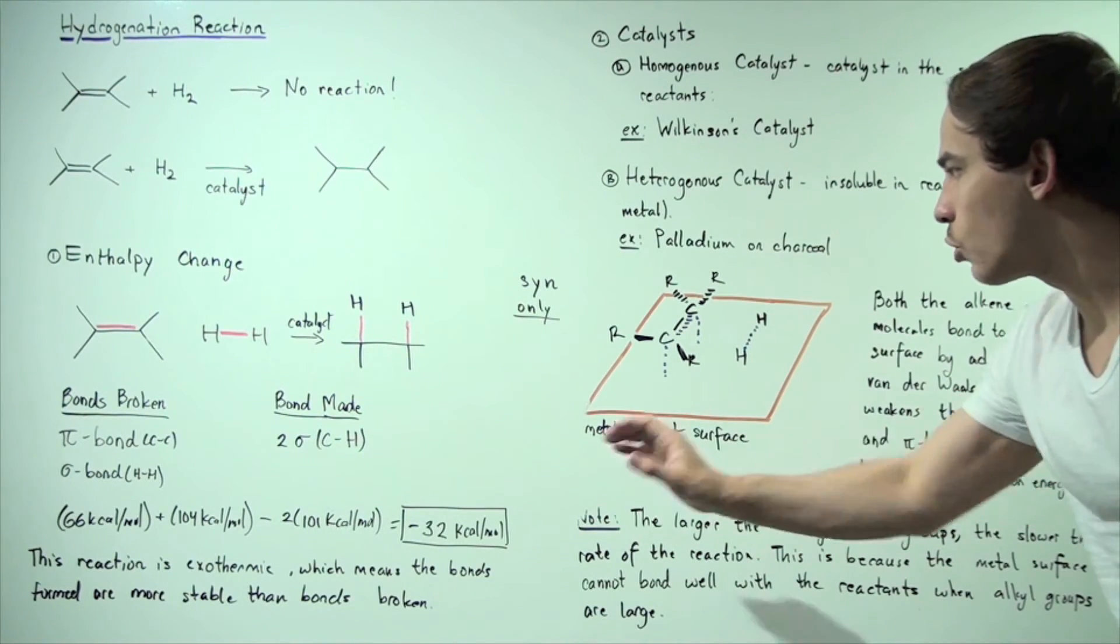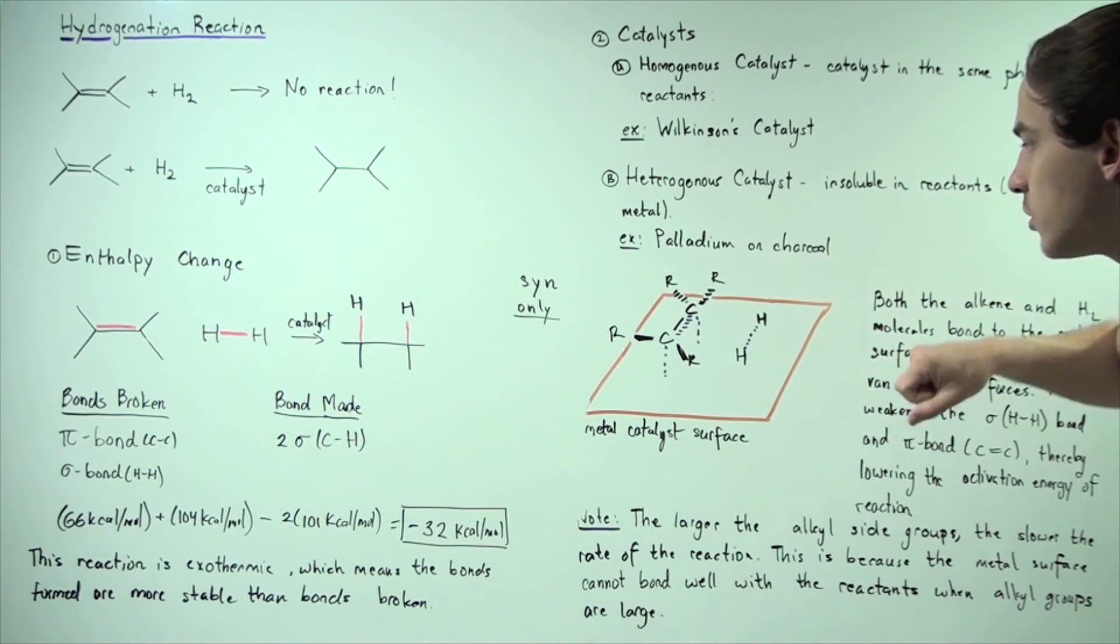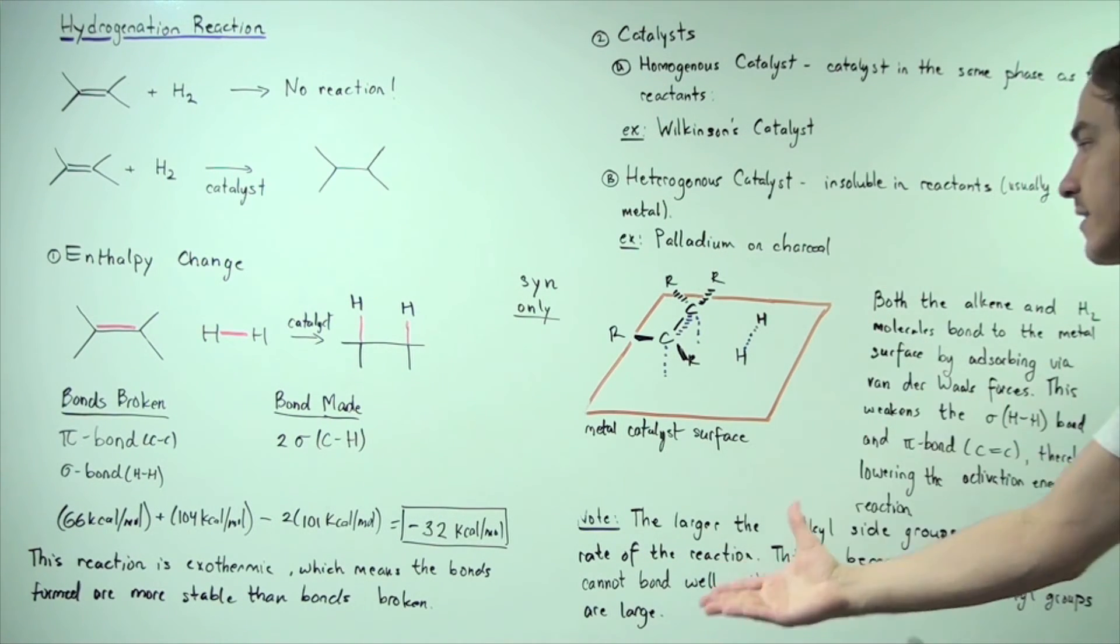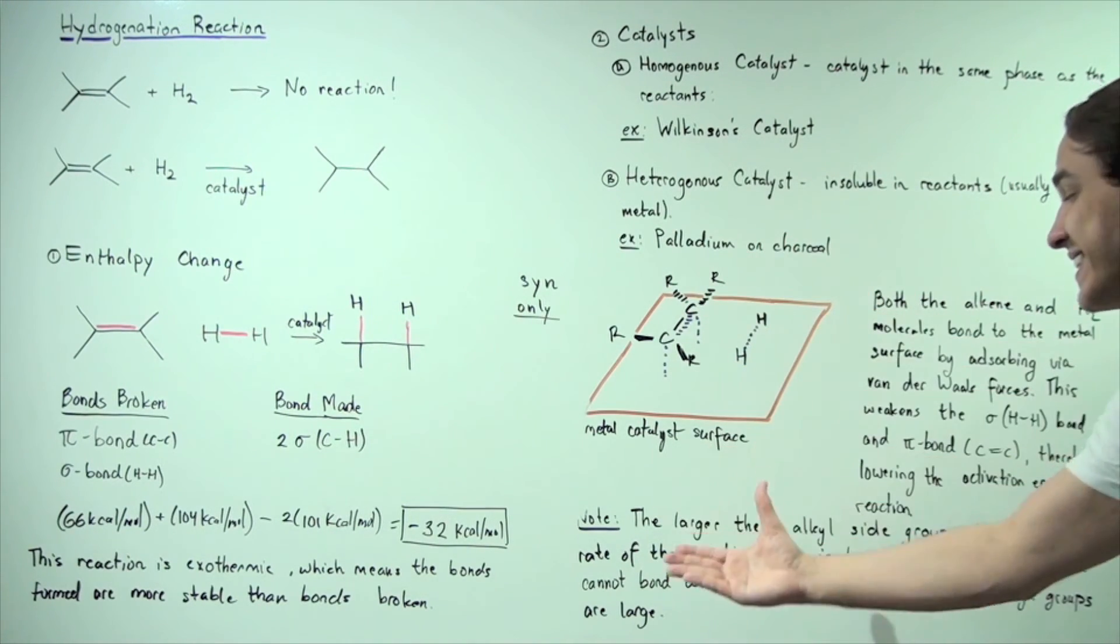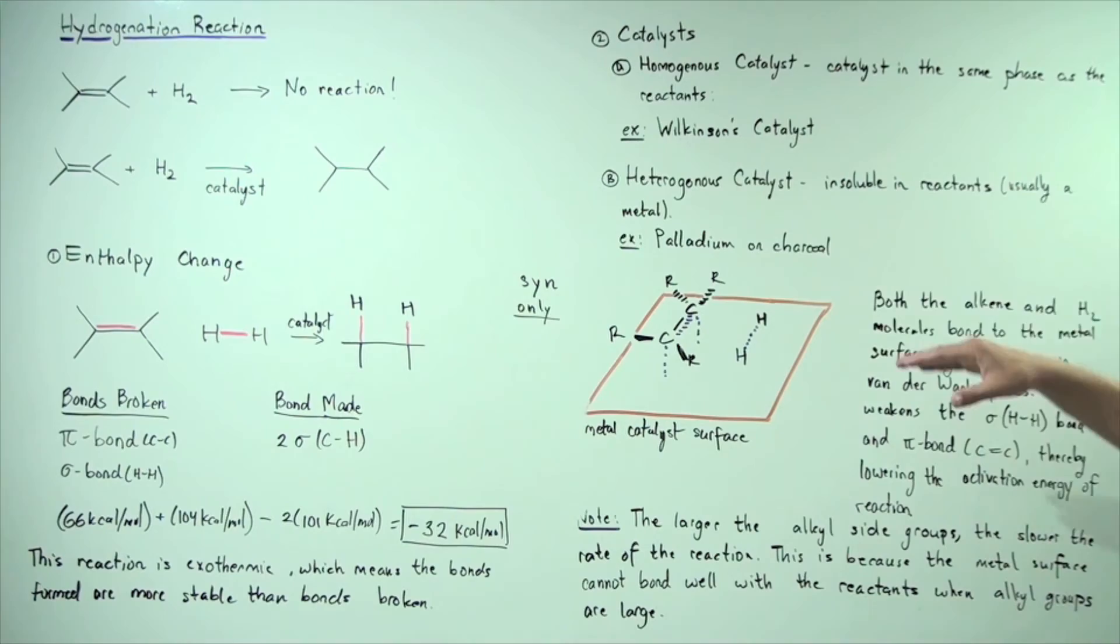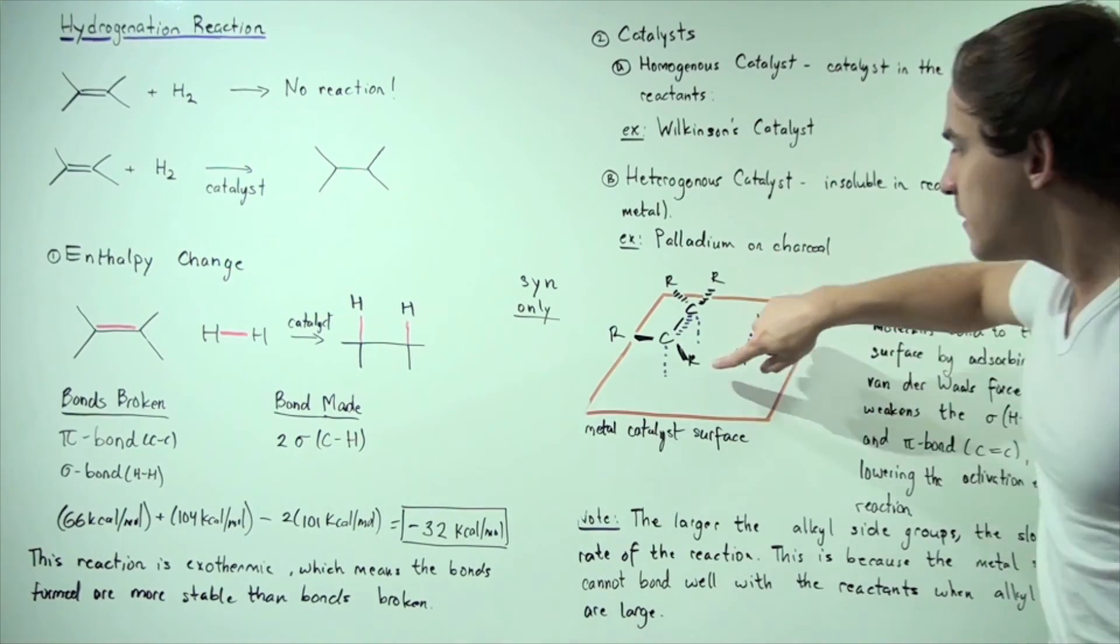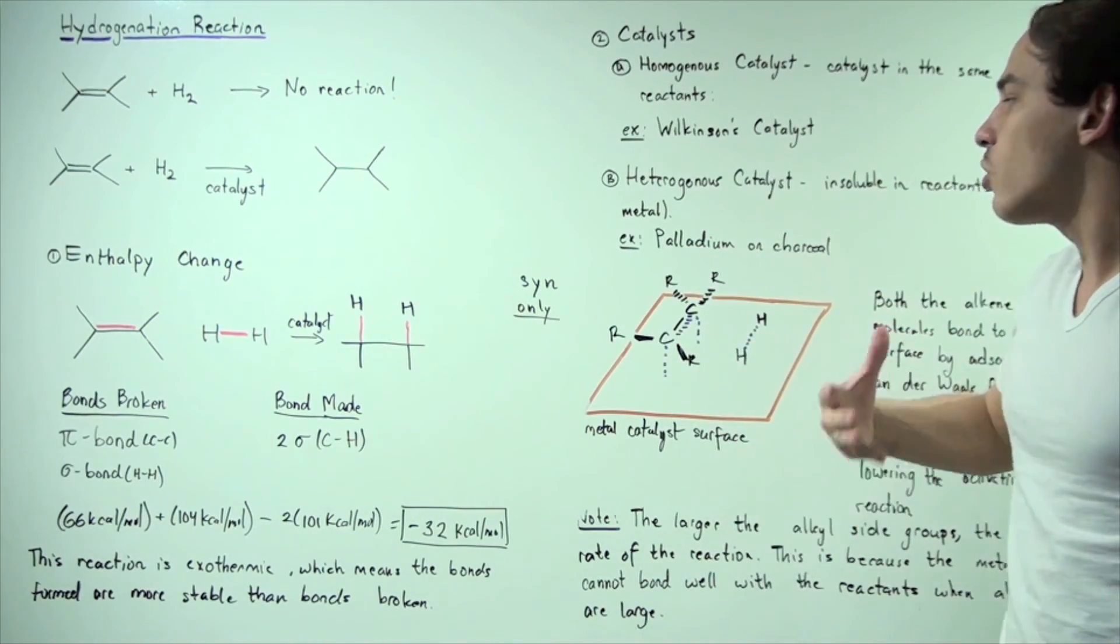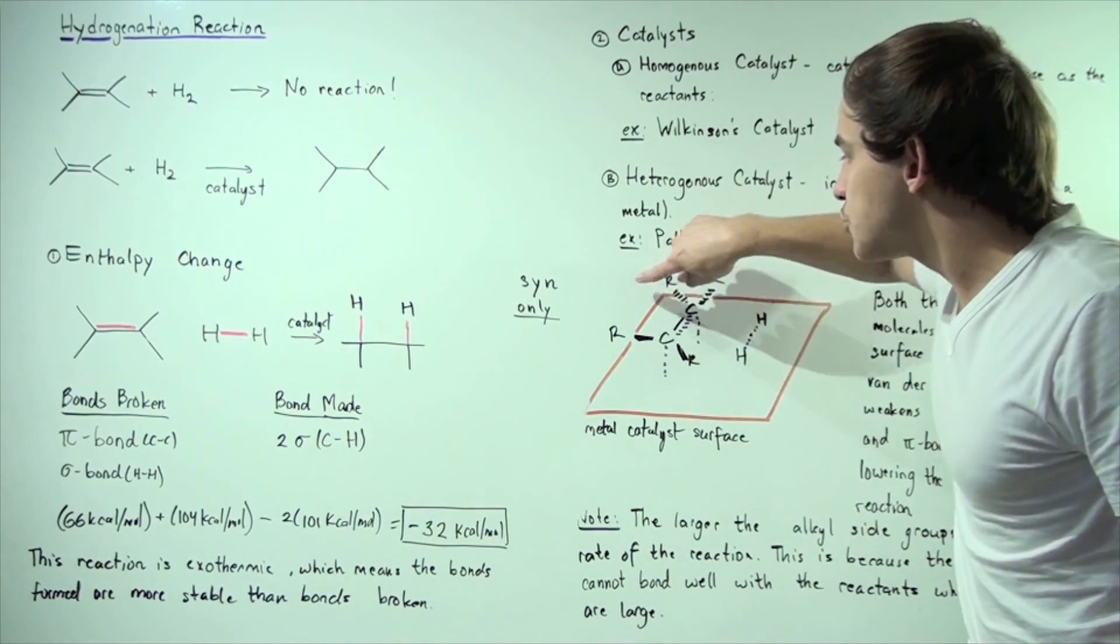So, note the following important point. The larger these side chains are, the larger these alkyl groups are, the slower our rate of our reaction. Why? Well, this is because the metal surface cannot bond very well when these groups are very large. So the smaller these side chains are, these alkyl groups are, the more likely our reaction will take place. The larger these groups are, the less likely our reaction will take place.